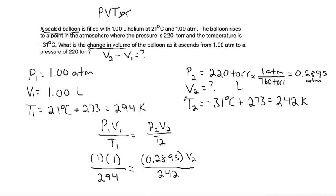From here, to solve for V2, since we have a number that's multiplied by V2 and a number that's divided, we can multiply by the number that's divided and divide by the number that's multiplied. Or you can think of it as multiplying by the reciprocal of what's multiplied by V2. So that puts the 242 on top and the 0.2895 on the bottom.